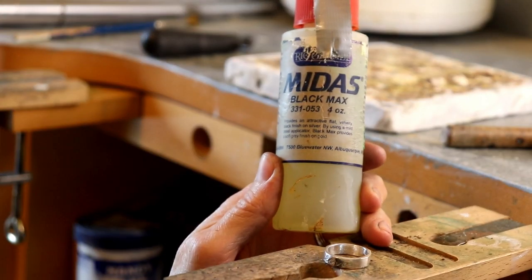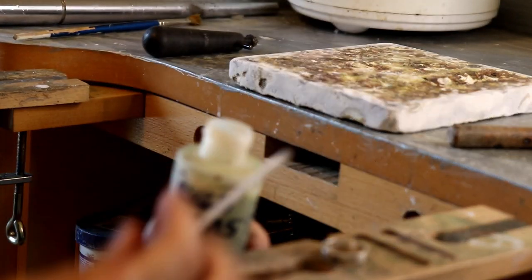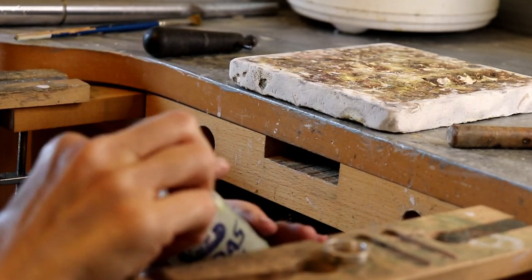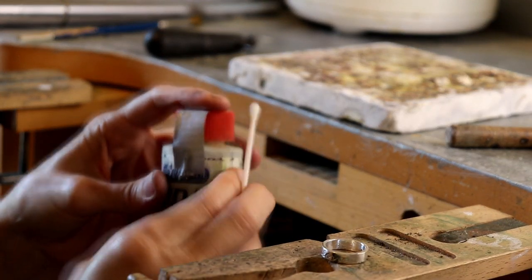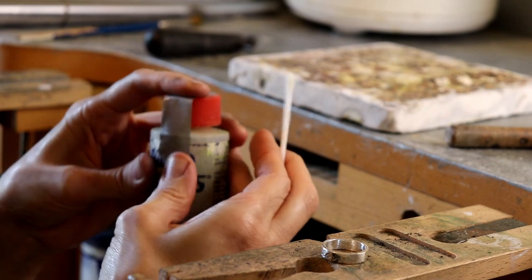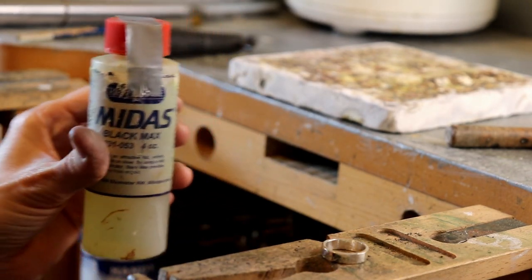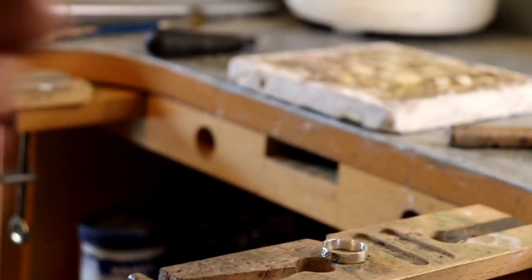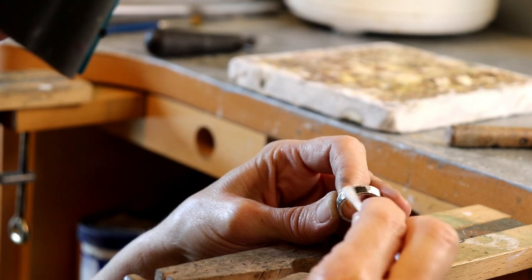I'm going to use black max. I lost the lid that goes with this so I really should get a proper storage solution for it. The problem is this stuff will corrode anything metal that it comes near so I store it in the garage away from tools. I'm blackening the engraving.